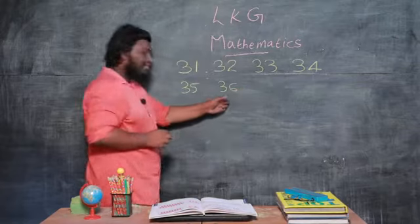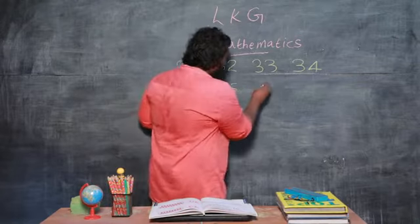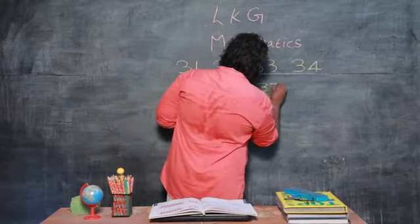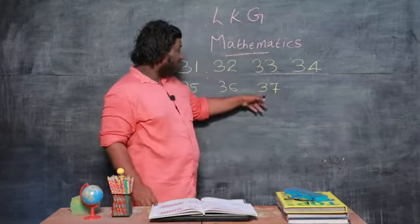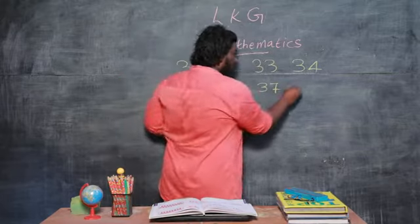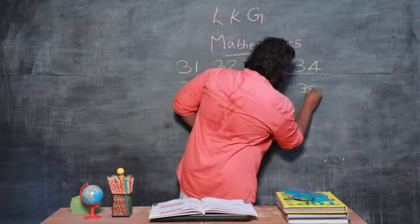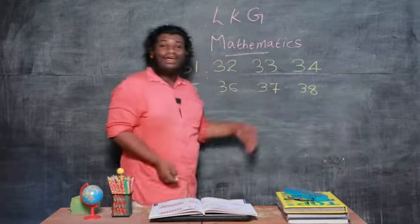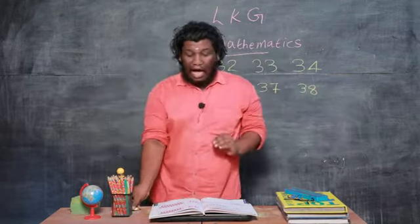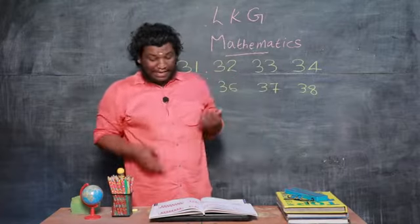36: 3, then 6. 37: 3, then 7. 38: 3, then 8. Here is the spelling of these. You can see how to spell them.